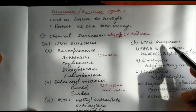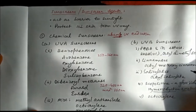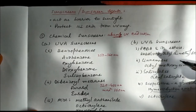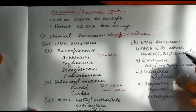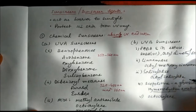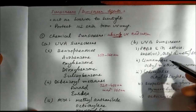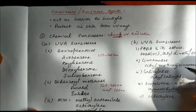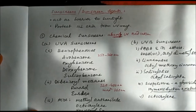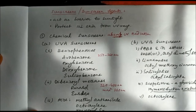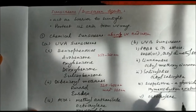Drugs that absorb UVB — UV light in the range of 290 to 320 nanometer — include PABA and its esters like octyl dimethyl PABA; cinnamates like octyl methoxycinnamate; salicylates like octyl salicylate; scopolitan; glycoside from Hymenodictyon excelsum; and octocrylene, which is also effective against UVB in addition to UVA.